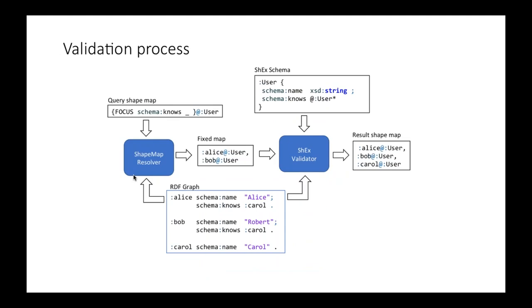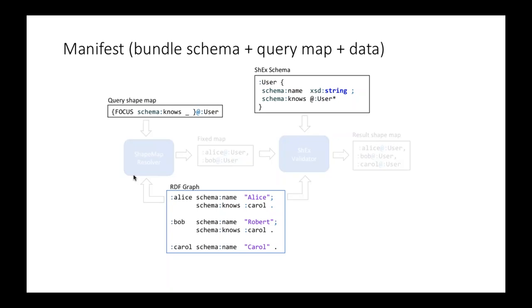The whole validation process takes a schema, a query shape map, and an RDF graph — that bundle is called a manifest entry. We can use manifest entries for testing, and like in WSDL or any other system, whenever you want to validate some part of your payload with respect to some schema, you have to specify what part of the payload you're validating, and we do that with manifests.